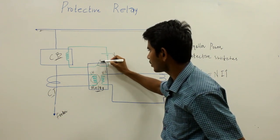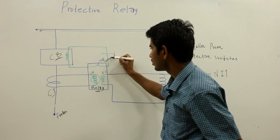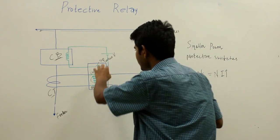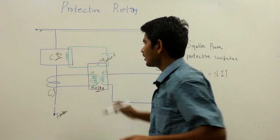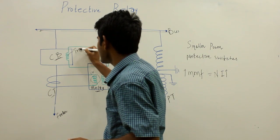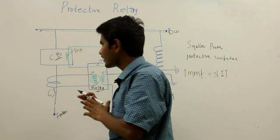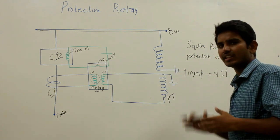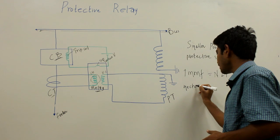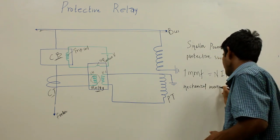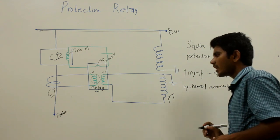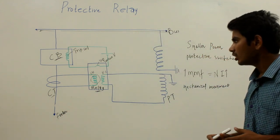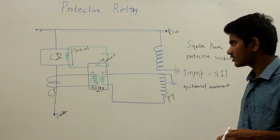This trip contact gets closed as the MMF of the coil increases, and when it closes the DC trip coil circuit is completed. Once the circuit gets completed, the trip coil gets energized. This trip coil, after getting energized, initiates the mechanical movement of the tripping mechanism to isolate the faulty portion, and ultimately the circuit breaker is tripped to isolate the fault. This is basically how the faulty portion is isolated in a power system using the protective relay.